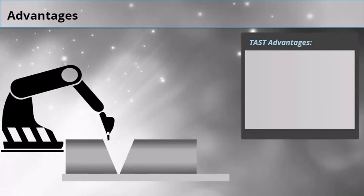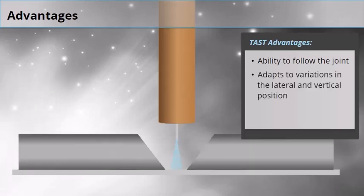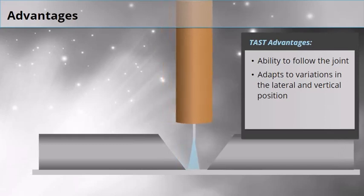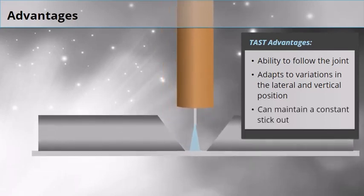The advantage of TAST is its ability to follow the joint regardless of joint variation or placement. TAST adapts to these variations in the lateral across joint movements and in the vertical position, meaning that the robot can maintain a constant stick out if the vertical placement varies.